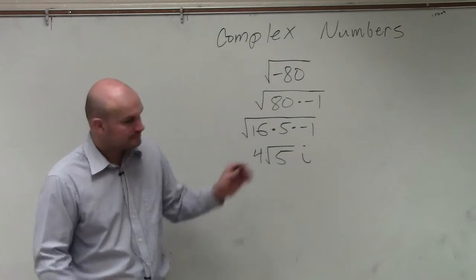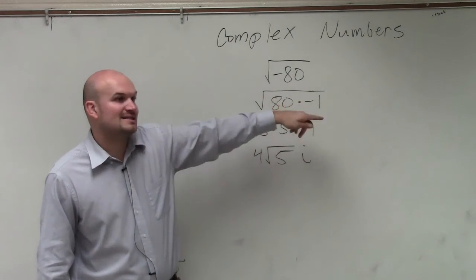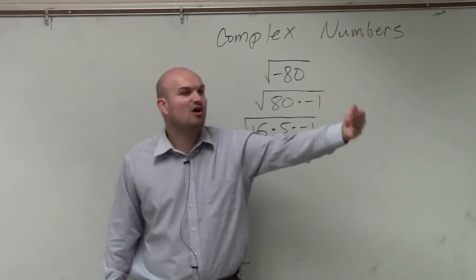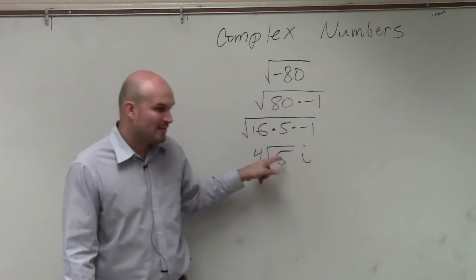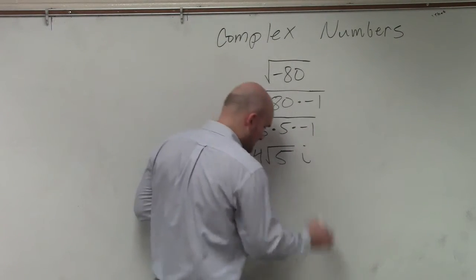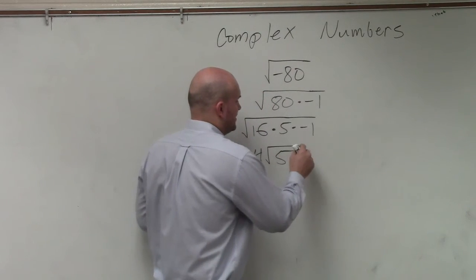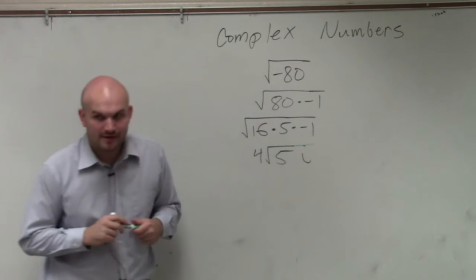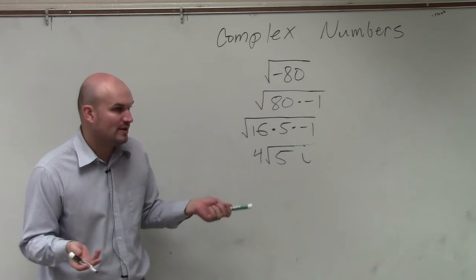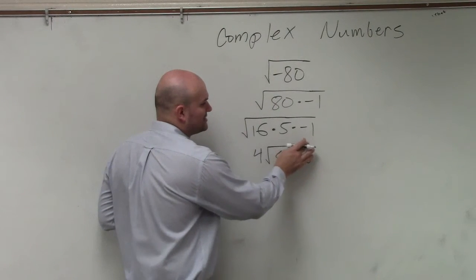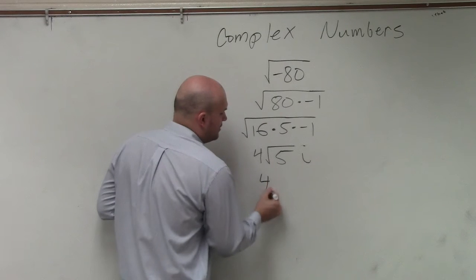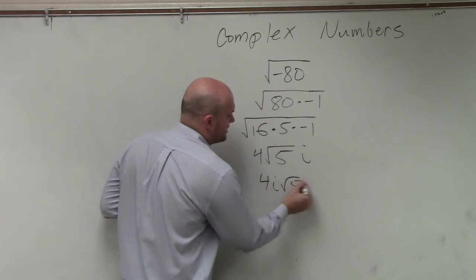However, even though I wrote the last example as 12i, whenever you're dealing with a radical, it's a very common mistake that students will carry this over. So to avoid that mistake, when we have a radical in our answer and an i, we prefer to write it like this.